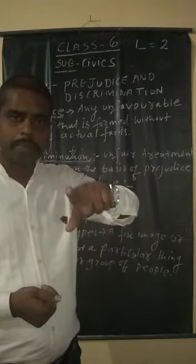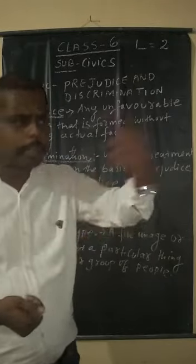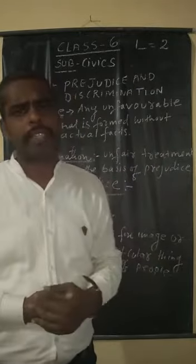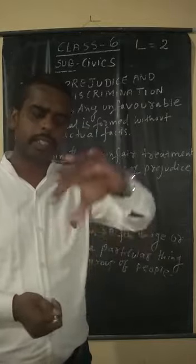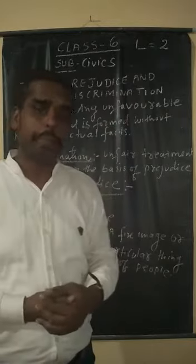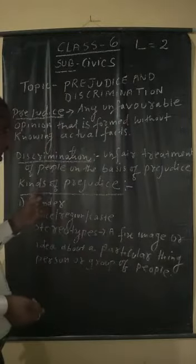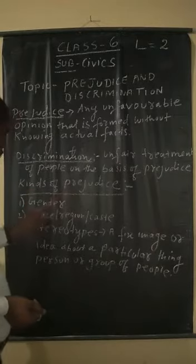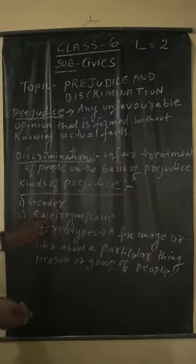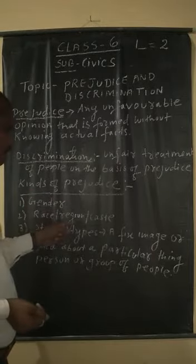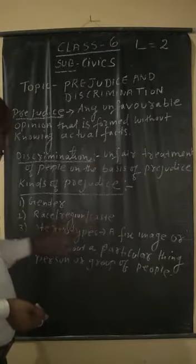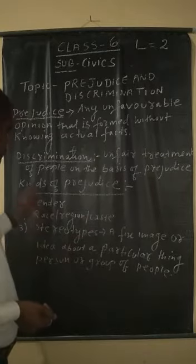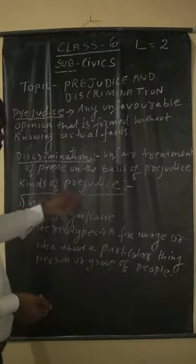Some people also think that if you play with lower caste people, you become lower yourself. This is not right — this is also a prejudice. There are three kinds of prejudice: one is gender, second is race, region, and caste, and third is stereotypes. These are the three kinds of prejudice.